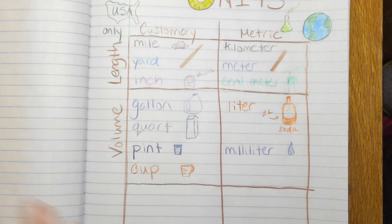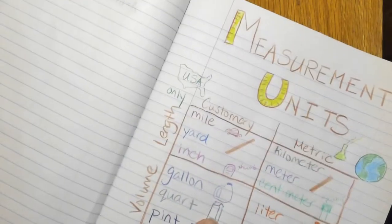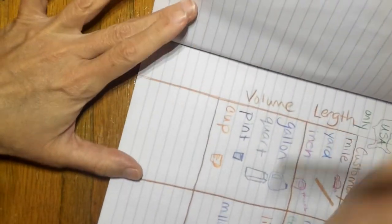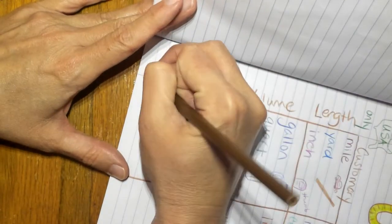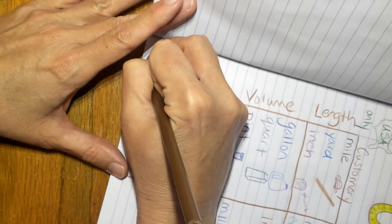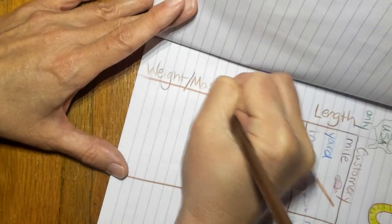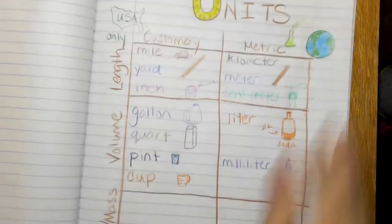So those are your volume units. So the next thing you need to write is weight and mass. And if you want to know the difference between weight and mass ask your science teacher because I'm not explaining it today.